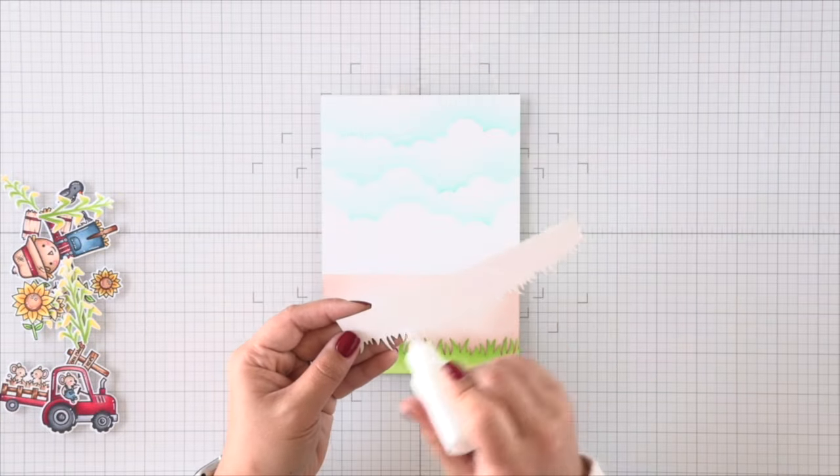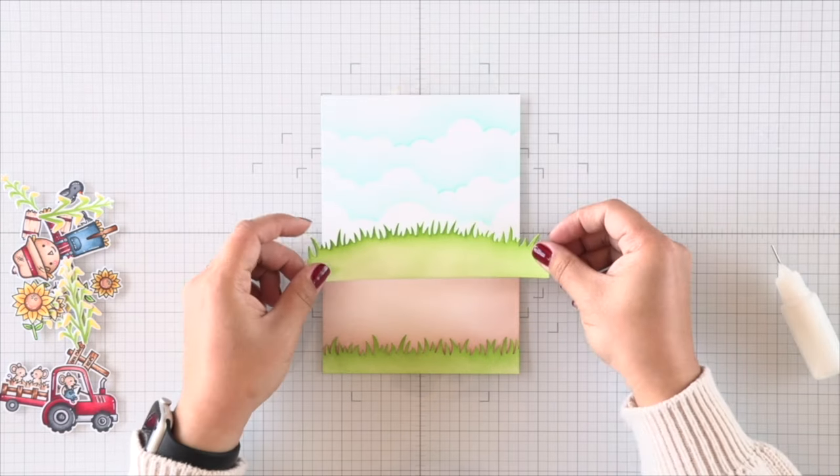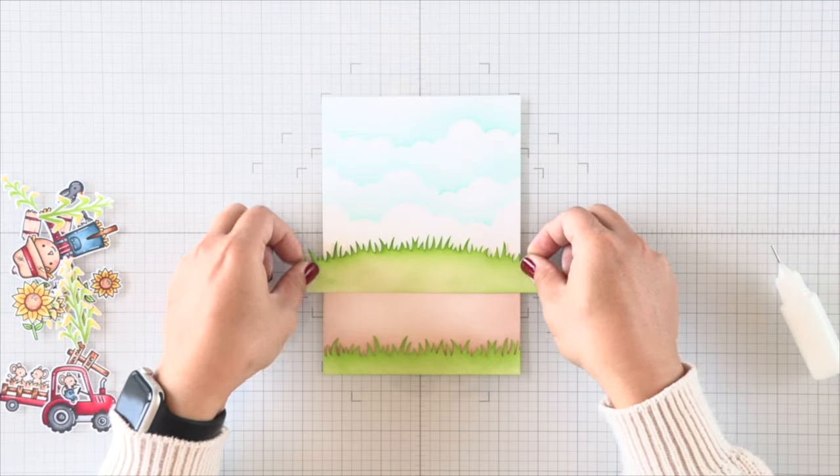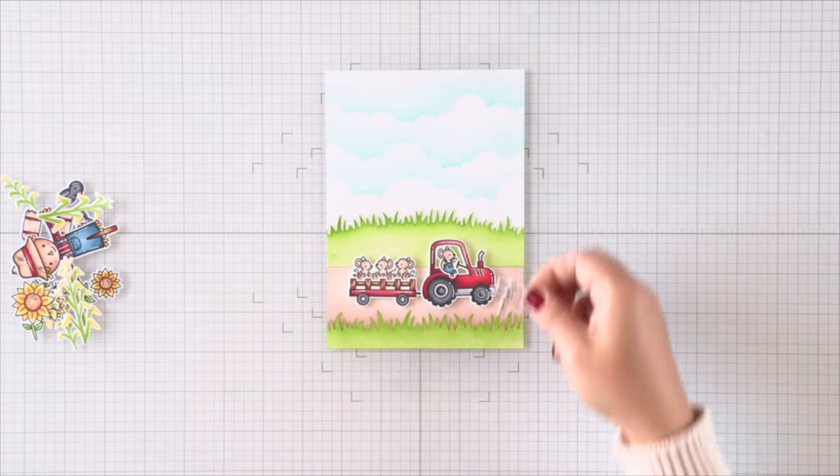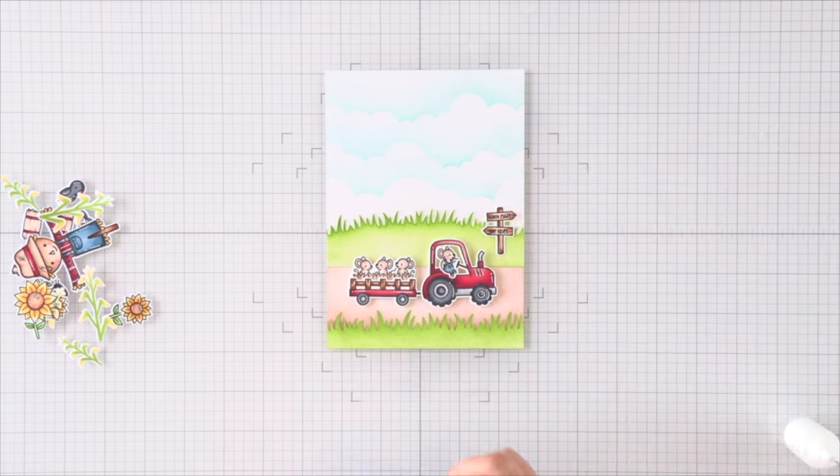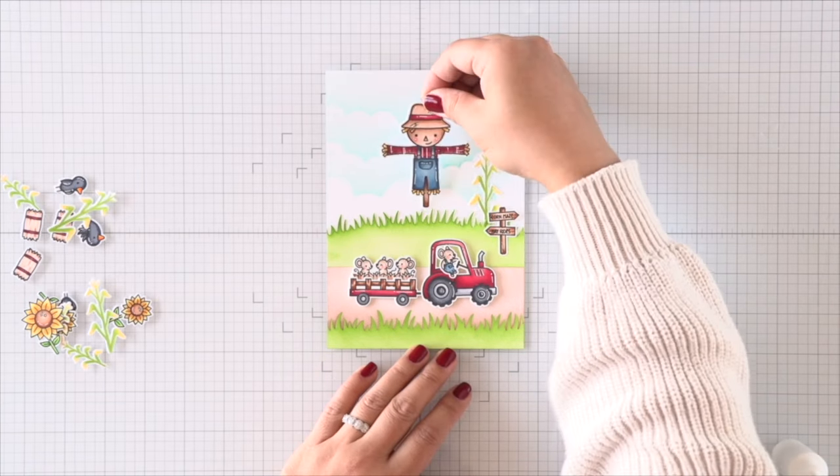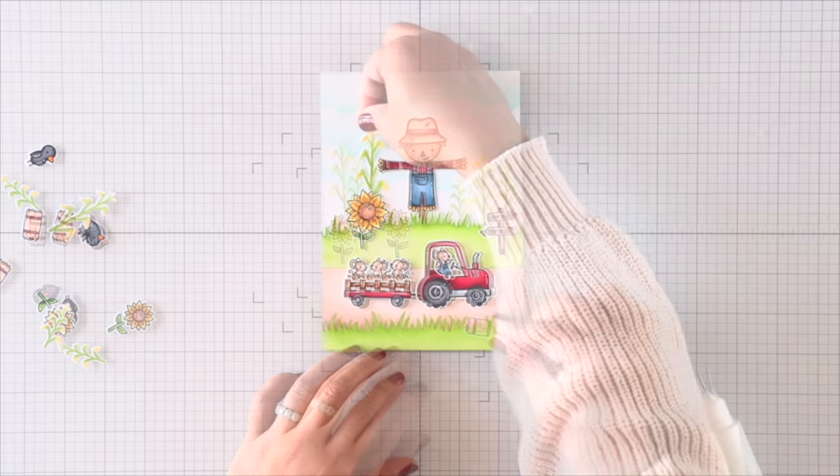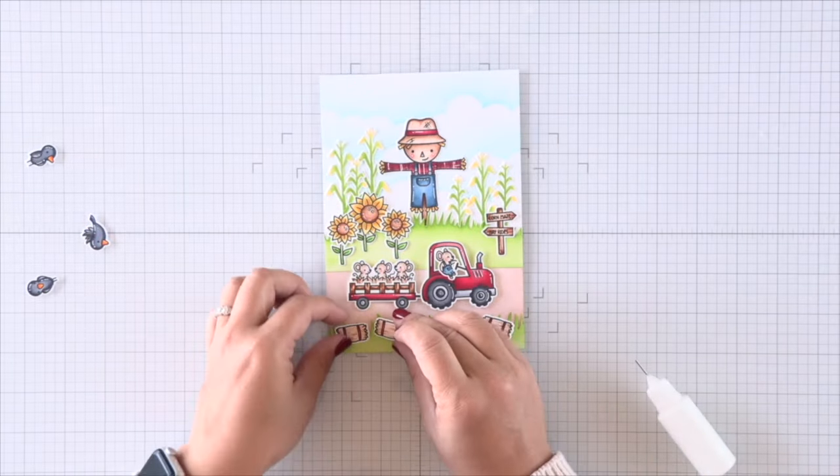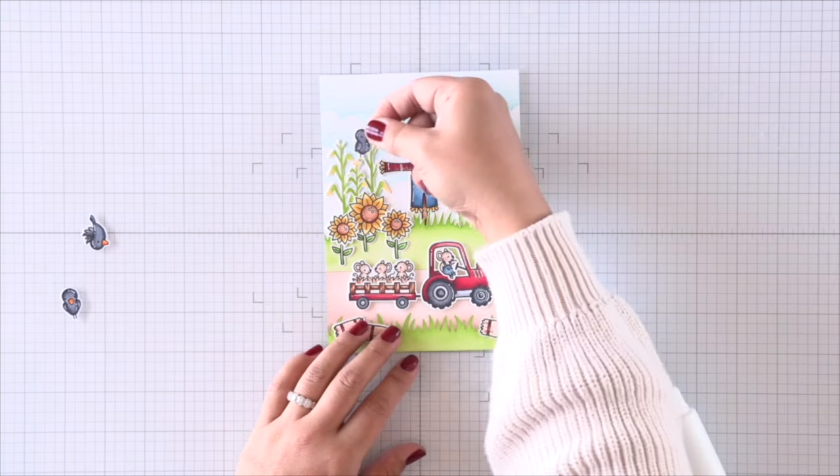And then I'll adhere that just over that dirt road. I'll trim off the excess on this panel so that we have nice crisp edges, and then I can start attaching all of my images. It's so fun for me to start building this scene. So once I have my tractor in the front there, I'm going to attach my scarecrow and then attach all of my corn stalks around him.